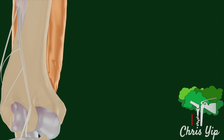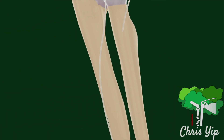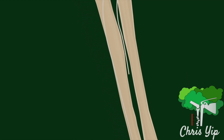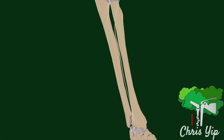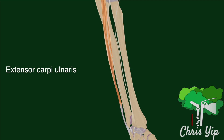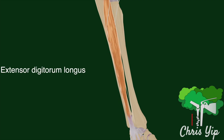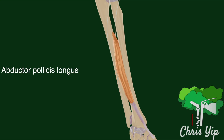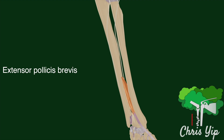The posterior interosseous nerve reaches the back of the forearm by passing around the lateral aspect of the radius, deep into the posterior compartment of the forearm. This is a motor nerve that supplies the muscles in the posterior compartment, such as the extensor carpi radialis brevis, the supinator, the extensor carpi ulnaris, the extensor digitorum, the extensor digiti minimi, the abductor pollicis longus, the extensor pollicis longus, the extensor pollicis brevis, and the extensor indicis.